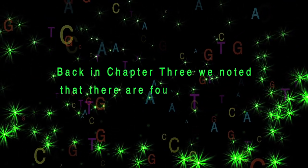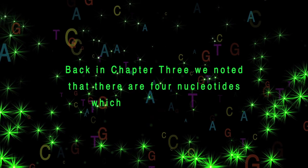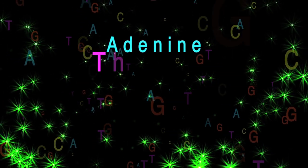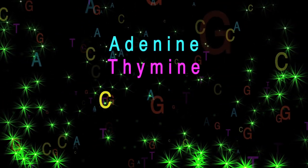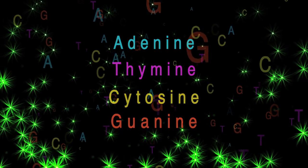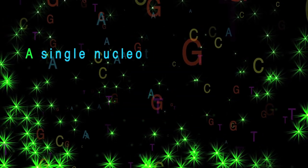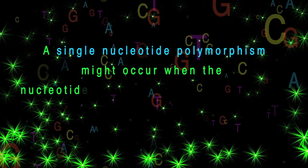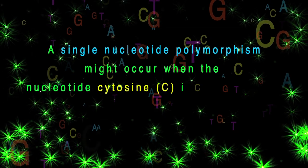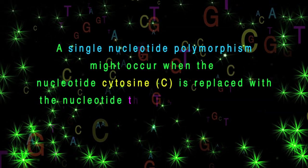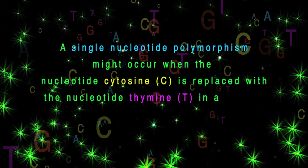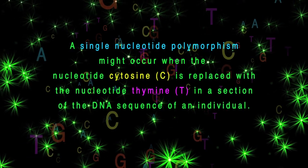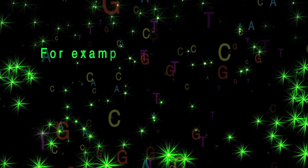There are four nucleotides which encode for DNA: adenine, thymine, cytosine, and guanine. A single nucleotide polymorphism might occur when the nucleotide cytosine is replaced with the nucleotide thymine in a section of the DNA sequence of an individual.